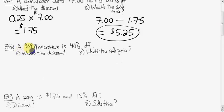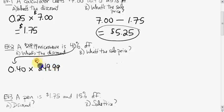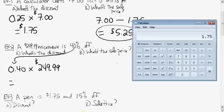Okay, second example. A $249.99 microwave is 40% off. What's the discount? What's the sales price? Same thing as before, find the discount. We take our 40%, convert it into a decimal, 0.40, multiply it by our $249.99. We multiply those two things together.